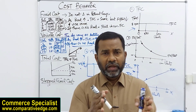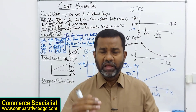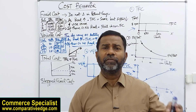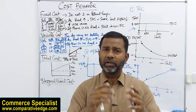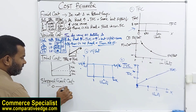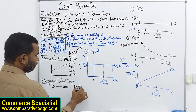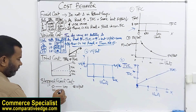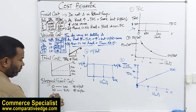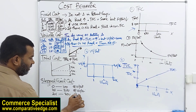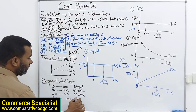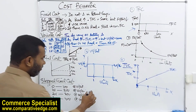We also have something known as stepped fixed cost. These costs remain fixed for a particular range, and after that there is a step up — they increase. The best example is a commission structure in a sales department. If sales people sell from 0 to 100 units, they get a commission of 10 per unit. From 100 to 200 units, they're paid at 20 per unit. From 200 to 300 units, they're paid at 30 per unit. From 300 to 400 units, they're paid at 40 per unit.